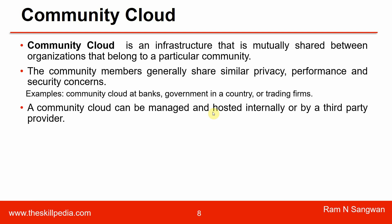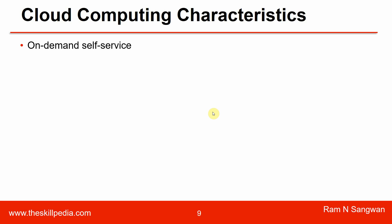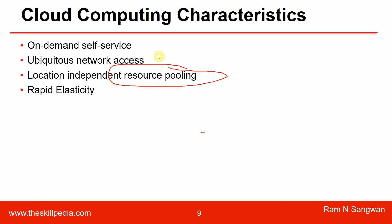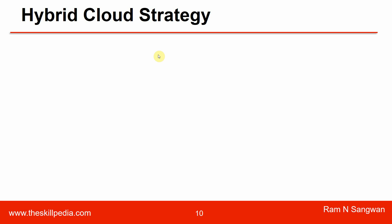Cloud computing characteristics include: on-demand self-service, ubiquitous network access, location-independent resource pooling — where resources are added to the cloud irrespective of their physical location — rapid elasticity, and pay-per-use.